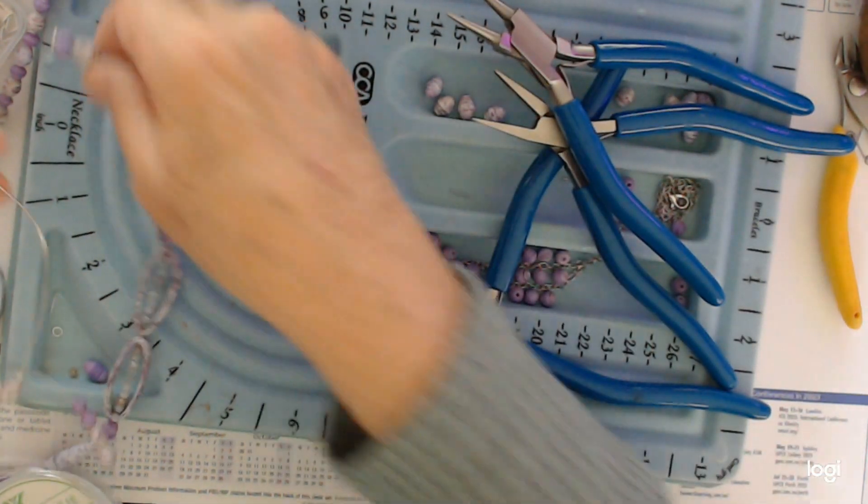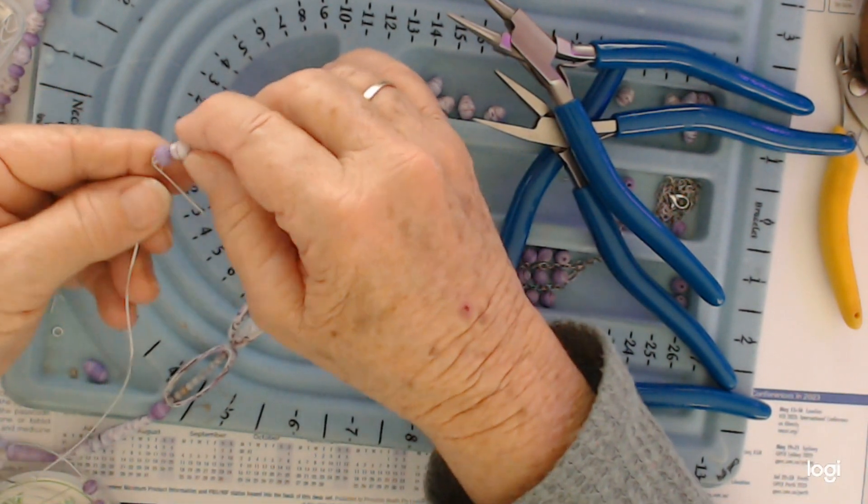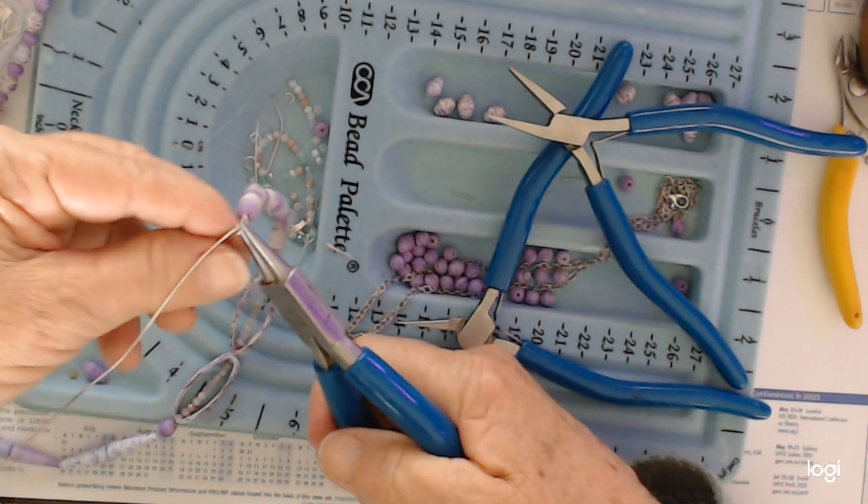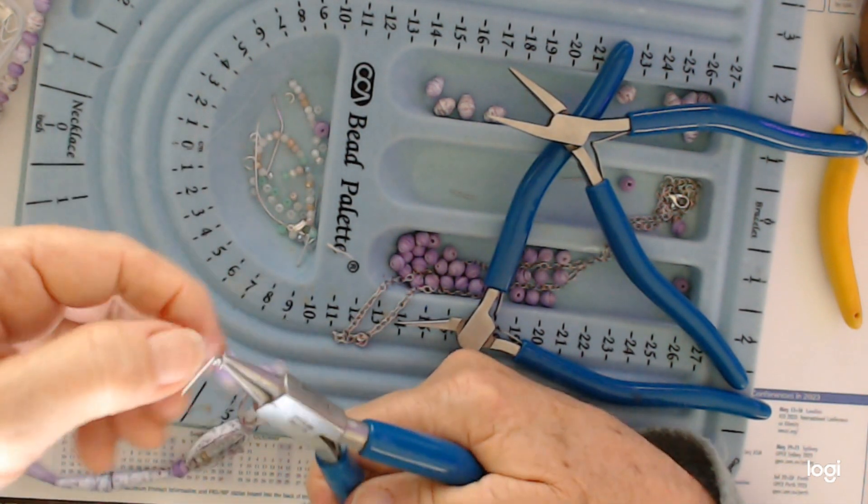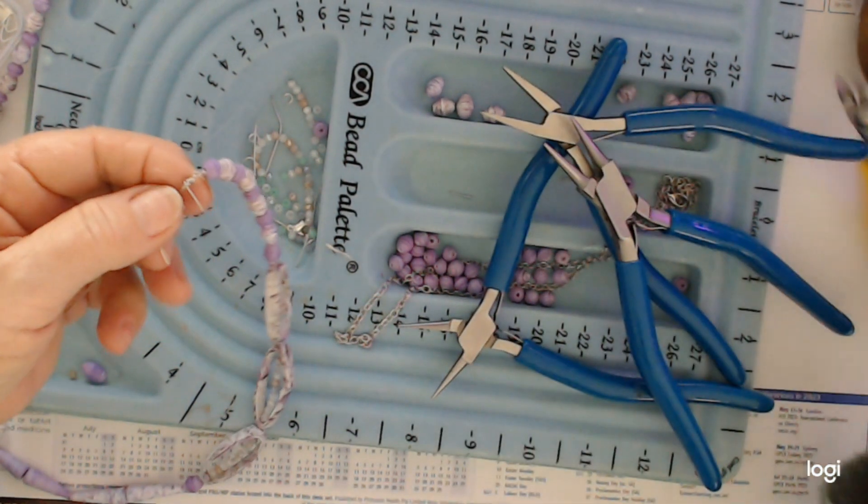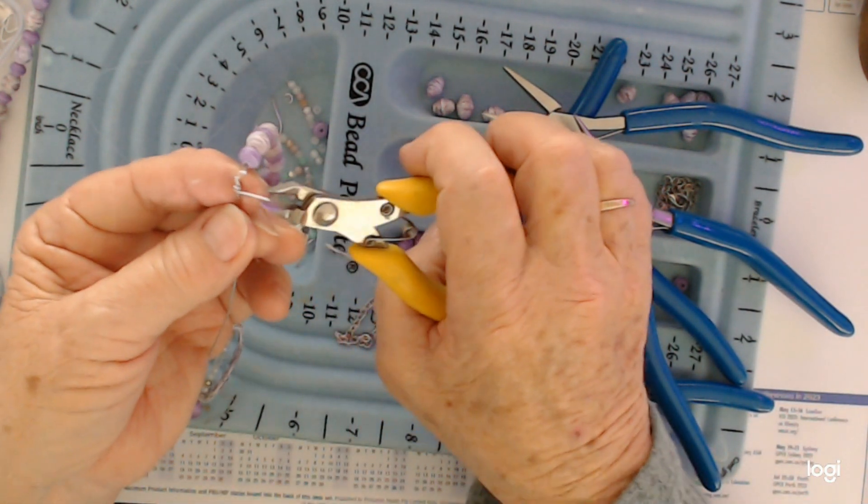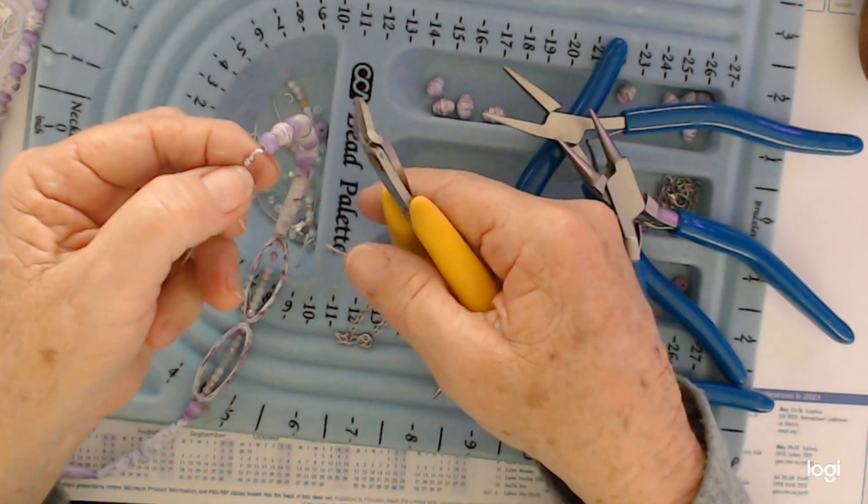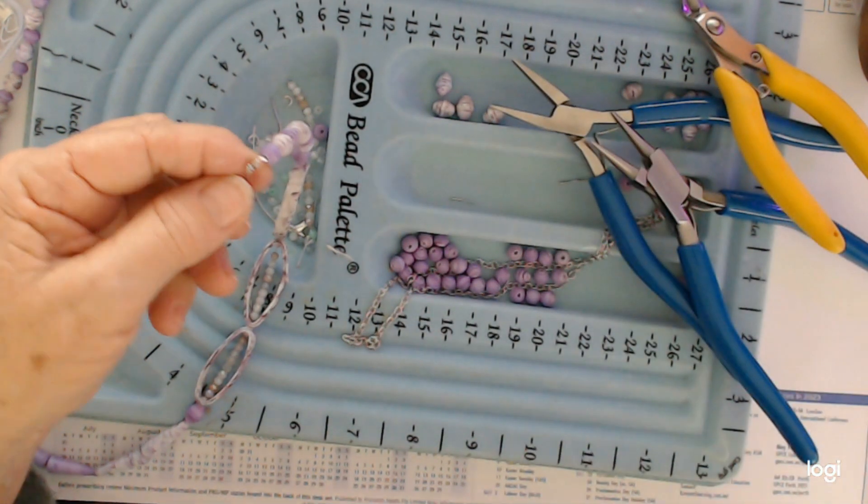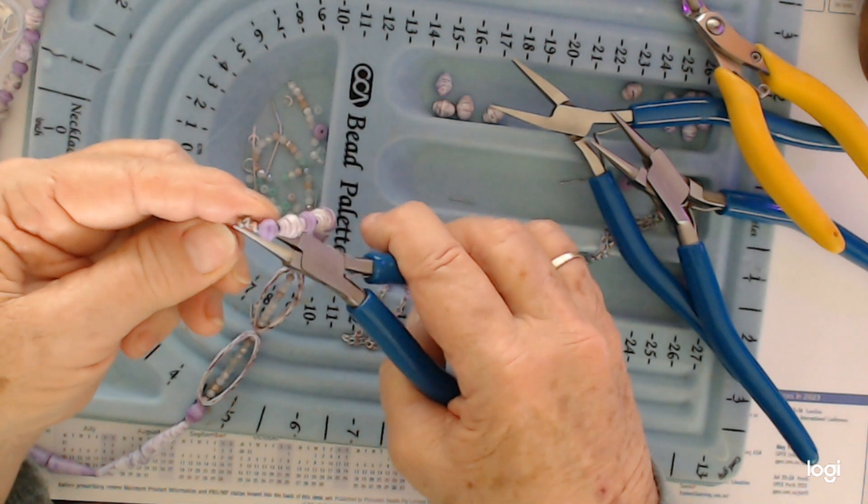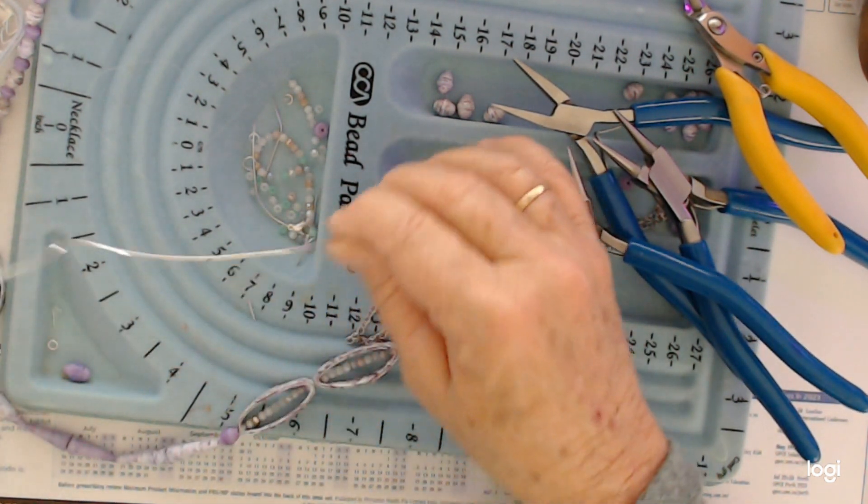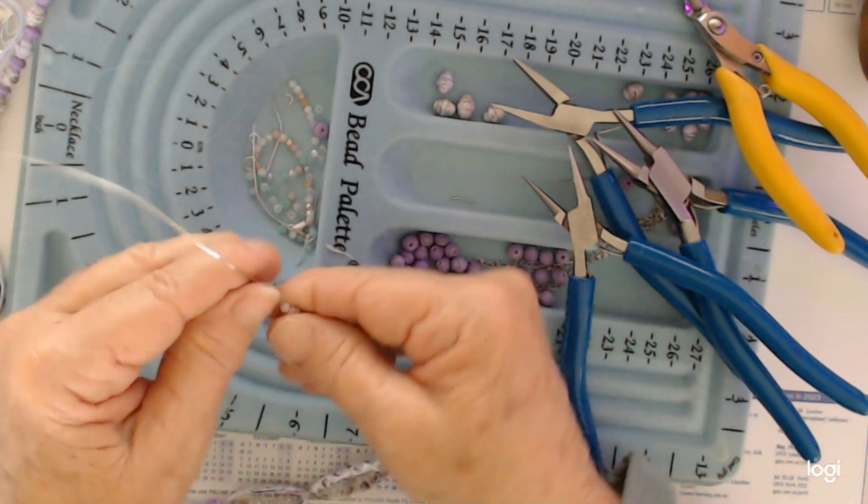I need my round nose pliers and then I'm going to wrap just twice around. And then I'm using my flat cutters flush against my wire so I end up with no sharp points. I'm going to flatten that down, bring this piece back up to there, and I'm going to cut it off.